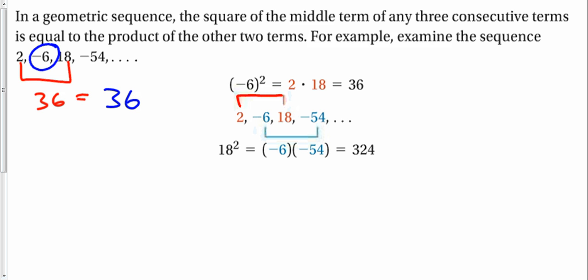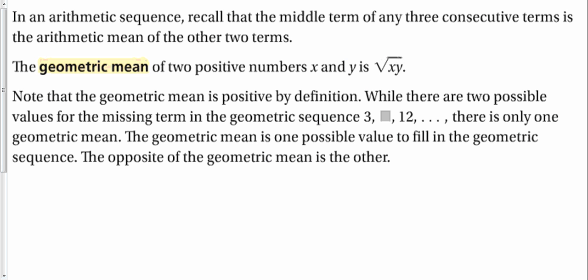If you look at the red line over here, negative 6 times 18 is equal to negative 6 squared. Also, in blue, negative 6 times negative 54 is equal to 18 squared, as shown on the bottom one. How does this help us? It helps us get the geometric mean.